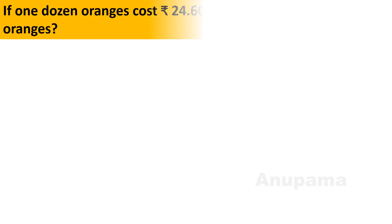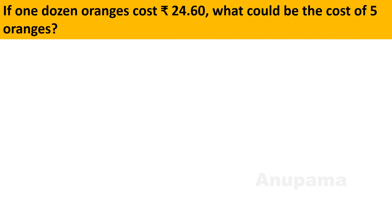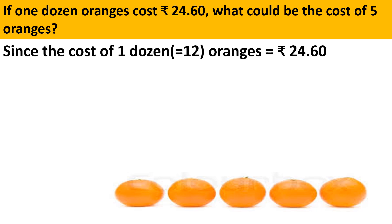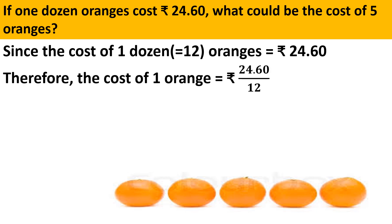Let us do one more question. If 1 dozen oranges cost Rs. 24.60, what would be the cost of 5 oranges? Since the cost of 1 dozen oranges equals Rs. 24.60, and 1 dozen equals 12, it means the cost of 12 oranges equals Rs. 24.60. According to the unitary method, we will find out the cost of 1 orange by dividing 24.60 by 12.